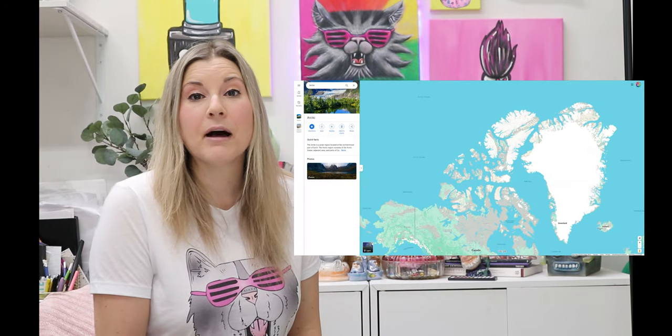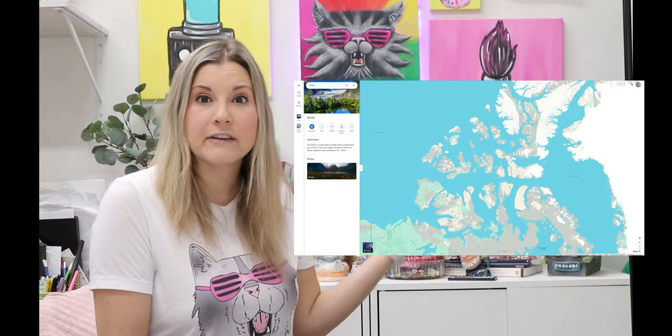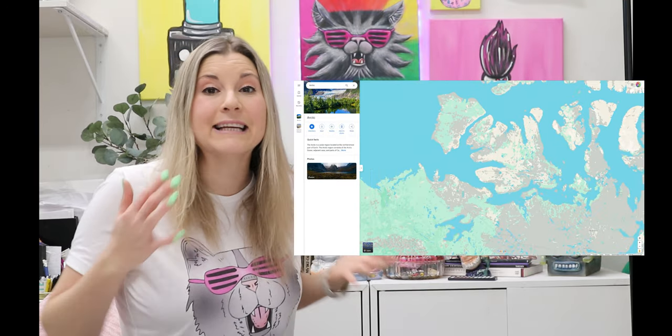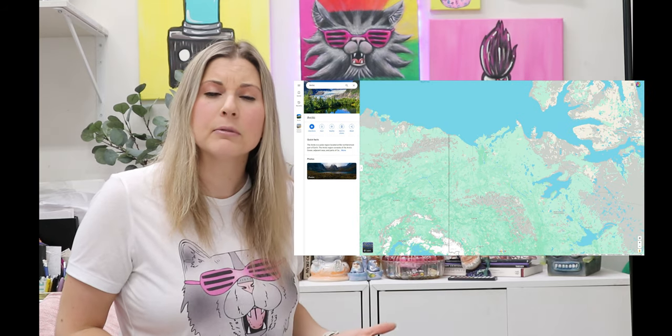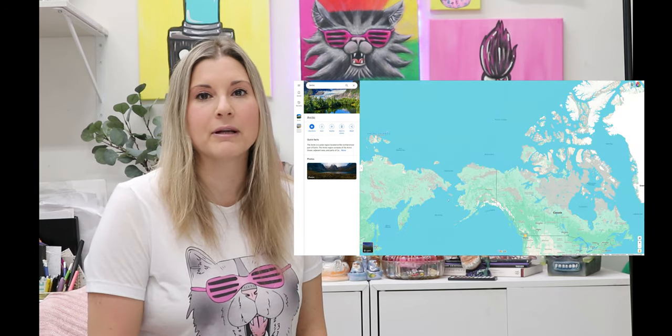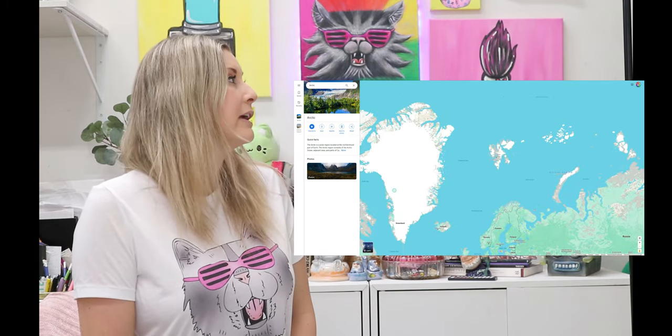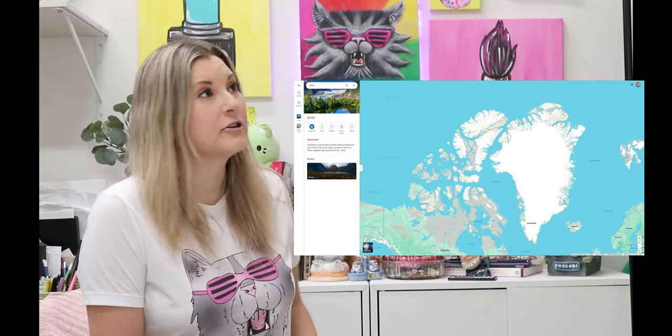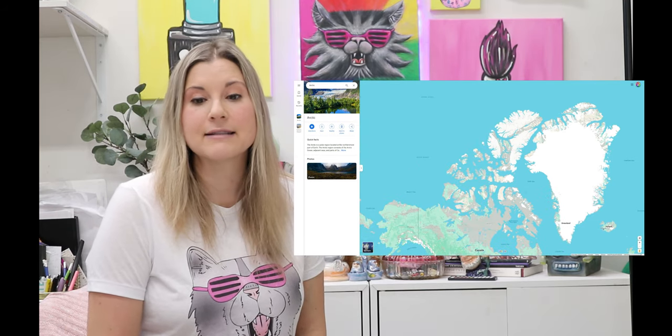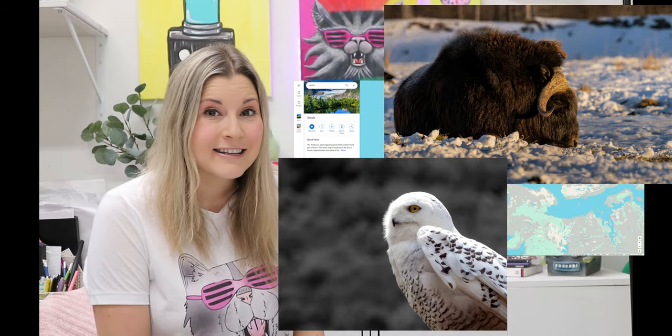I think of walruses, musk ox, Arctic fox, and snowy owls. They are so so cute. So you know what, we should take a look at some images of those animals. Alright, so this is a map of the Arctic. It gives you an idea of where in the world it is and where these animals might be living in a much more snowy environment compared to some other places such as a desert or even the prairies.